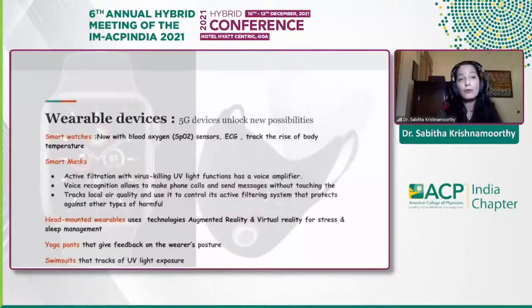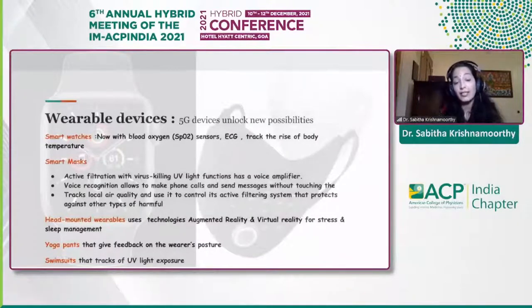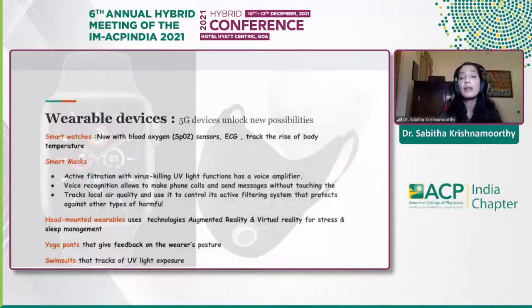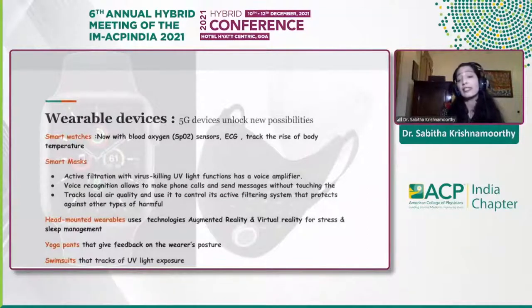Wearable devices — smartwatches, smart masks with active filtration by virus-killing UV light that also function as voice amplifiers, head-mounted wearables with AR and VR — augmented reality and virtual reality — are coming up in a large way to help reduce patient stress. Smart yoga pants can tell you the patient's posture, and swimsuits are also embedded with smart technology. Smartwatches can give pulse oximetry readings as well as BCG readings.